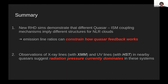Two main takeaway messages. First, our radiation hydrodynamic simulations show that the structure of the emission line clouds is sensitive to the dominant feedback mechanism, so we can use emission line ratios to constrain how quasar feedback works. Second, at least in nearby quasars, X-ray and UV emission lines observed suggest that radiation pressure currently dominates in these systems.